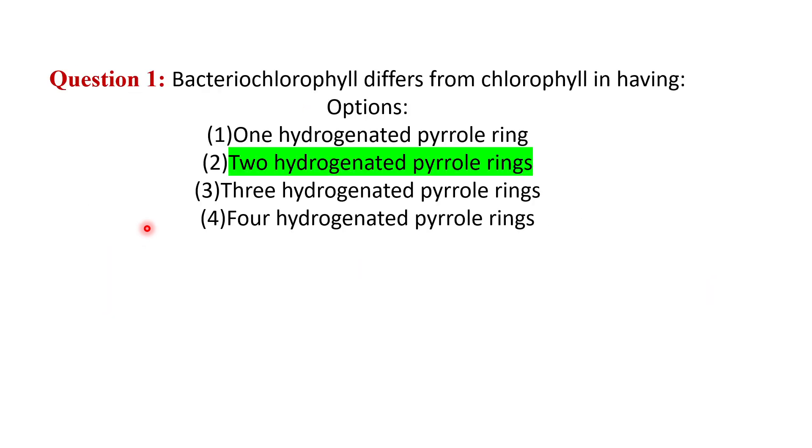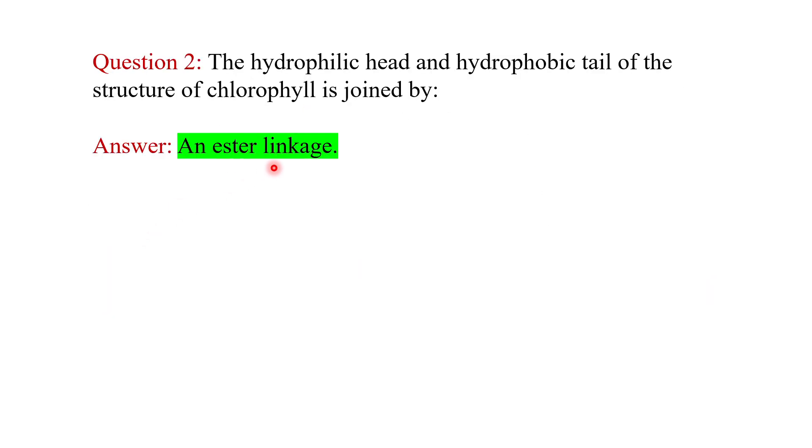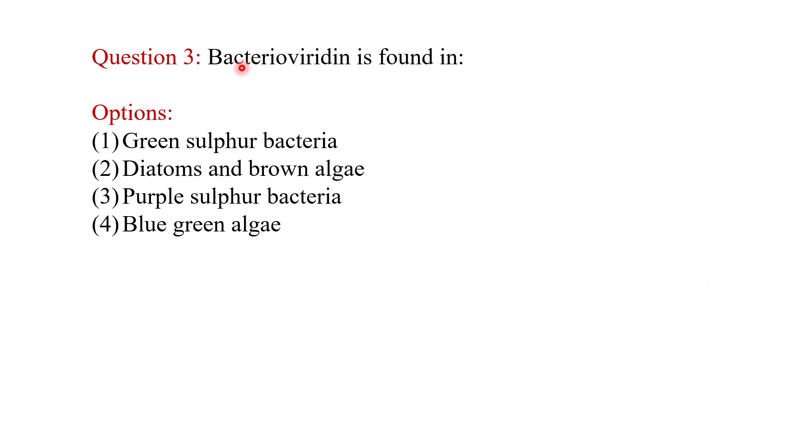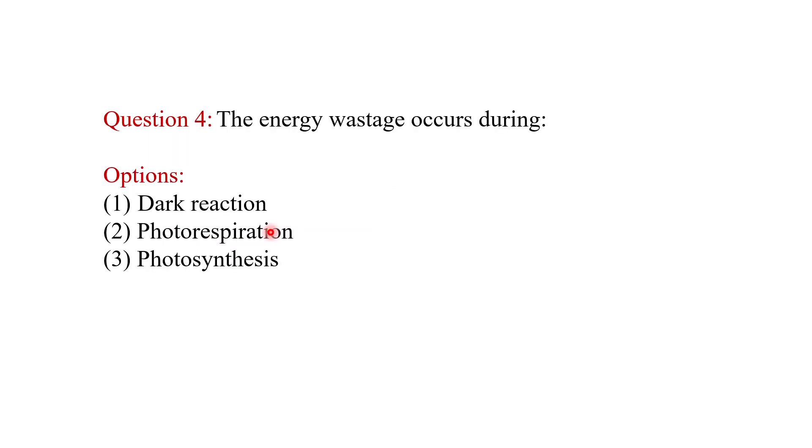The third question is: bacterioviridin is found in what? The answer is green sulfur bacteria. In diatoms and brown algae, they belong to the group Phaeophyceae. In purple sulfur bacteria, it is bacteriochlorophyll. In blue-green algae, they belong to the class Myxophyceae. The next question: energy wastage occurs during photorespiration.